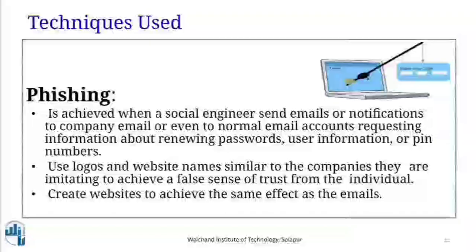The next technique is phishing. It is achieved when a social engineer sends an email or notification to a company email or normal email account requesting information about renewing a password, user information, or PIN numbers. They create a website that gives users the feel they are accessing an authentic website, however it is not so.